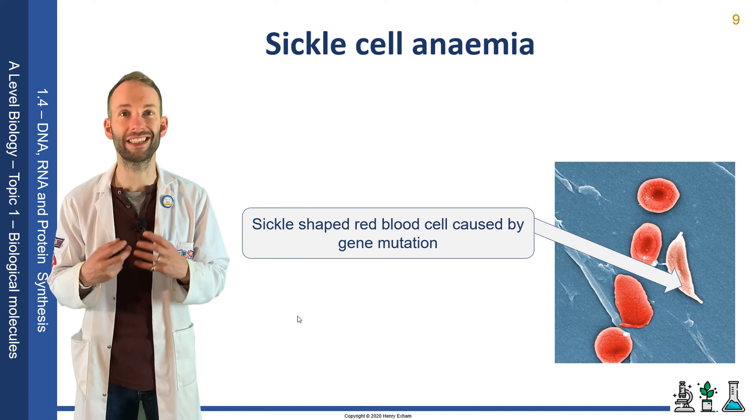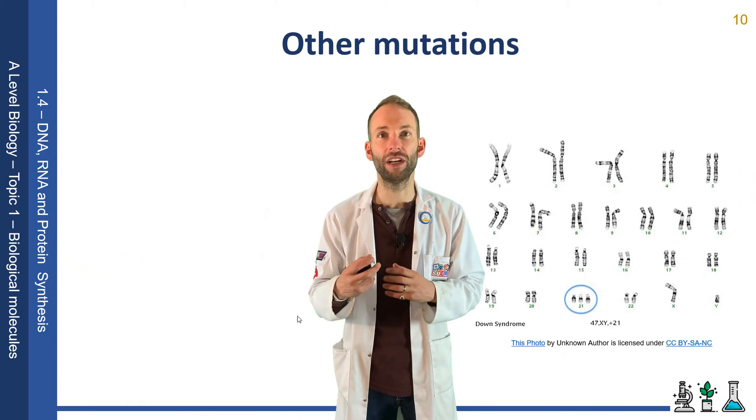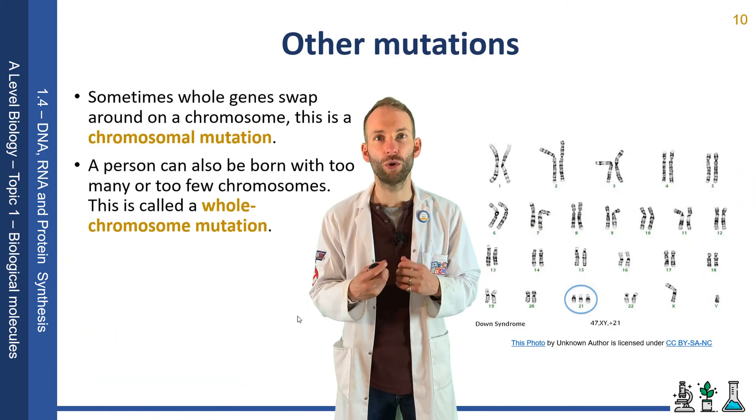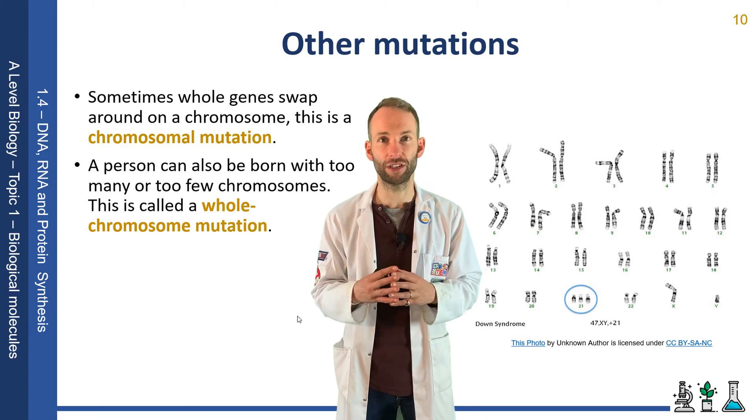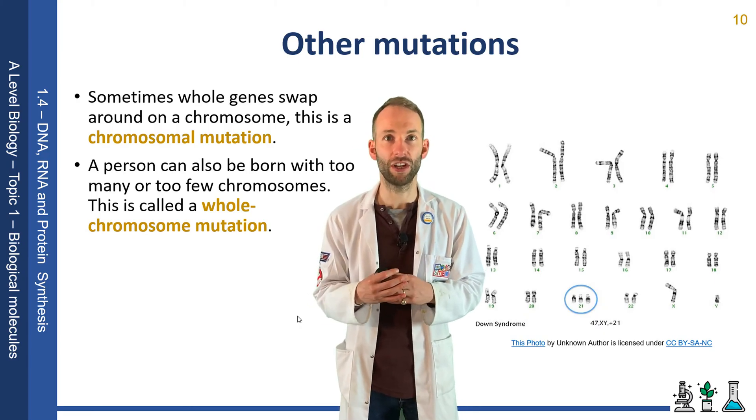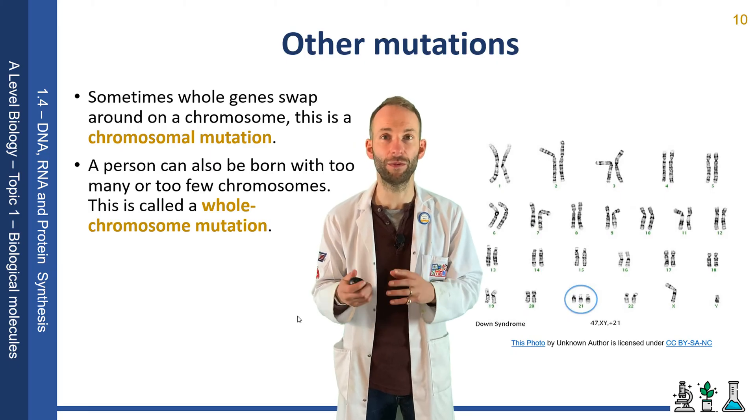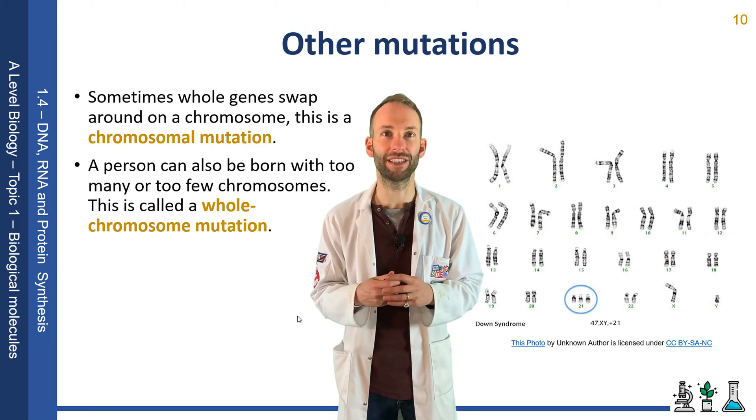Sometimes whole genes swap around on a chromosome. This is called a chromosomal mutation. Also, a person can be born with too many or too few chromosomes. This is called whole chromosome mutation. An example of this would be Down syndrome, and we'll look at that in a later presentation.